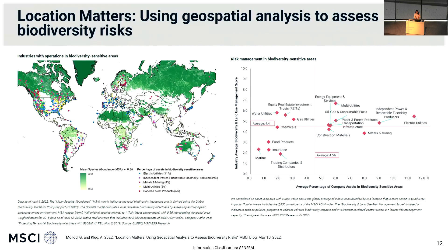This foundational asset location data is going to become even more important as we push into emerging areas such as measuring portfolio exposures to different dimensions of biodiversity risks, which is rising on the agenda of many investors. Here's just one example where we've overlaid the same asset location data used for physical risk modeling with a map of mean species abundance, which is an indicator of biodiversity intactness. There's a lot more to come in this area, and we're very excited to be leveraging more geospatial data in novel ways for portfolio-level measurement.